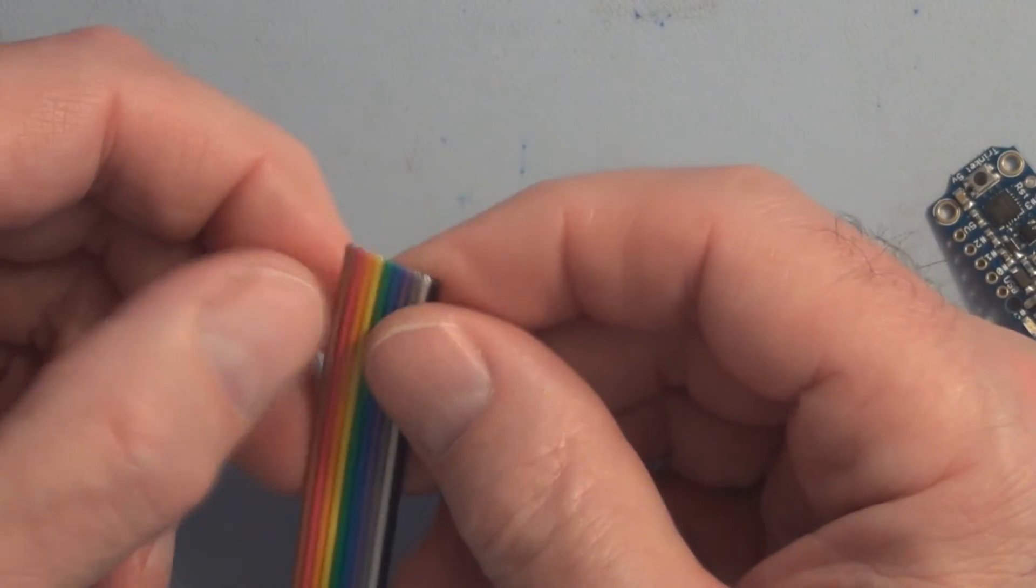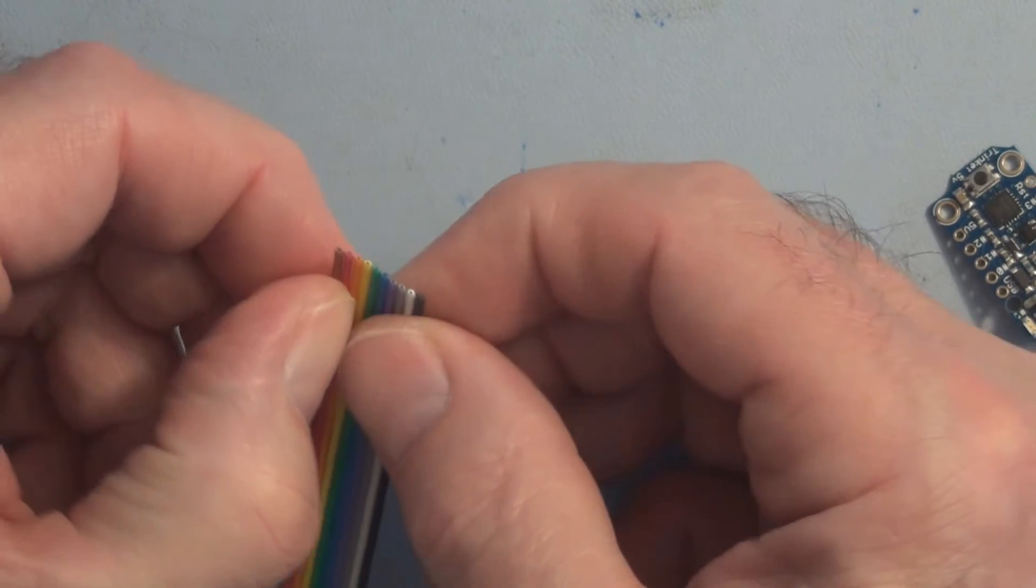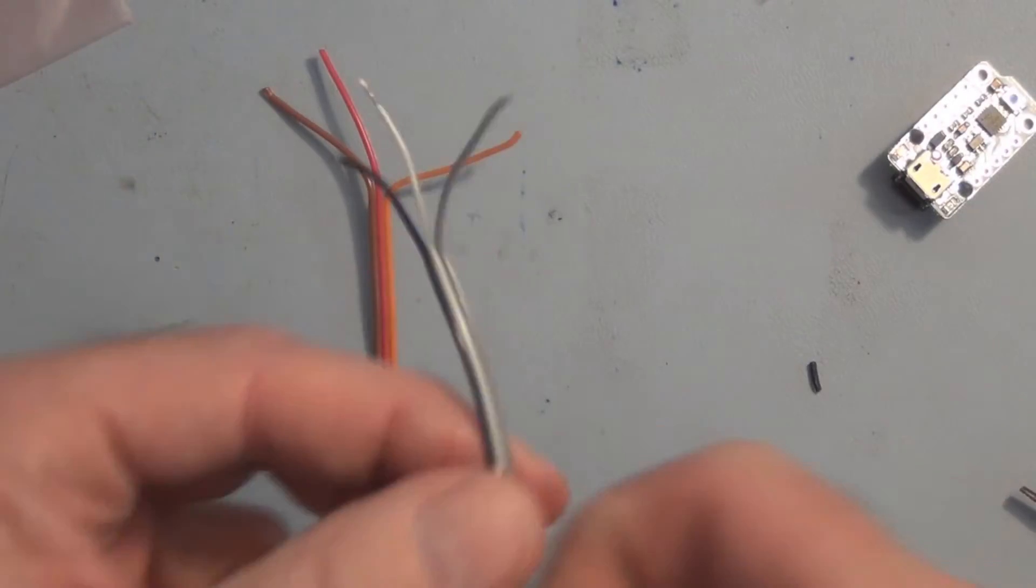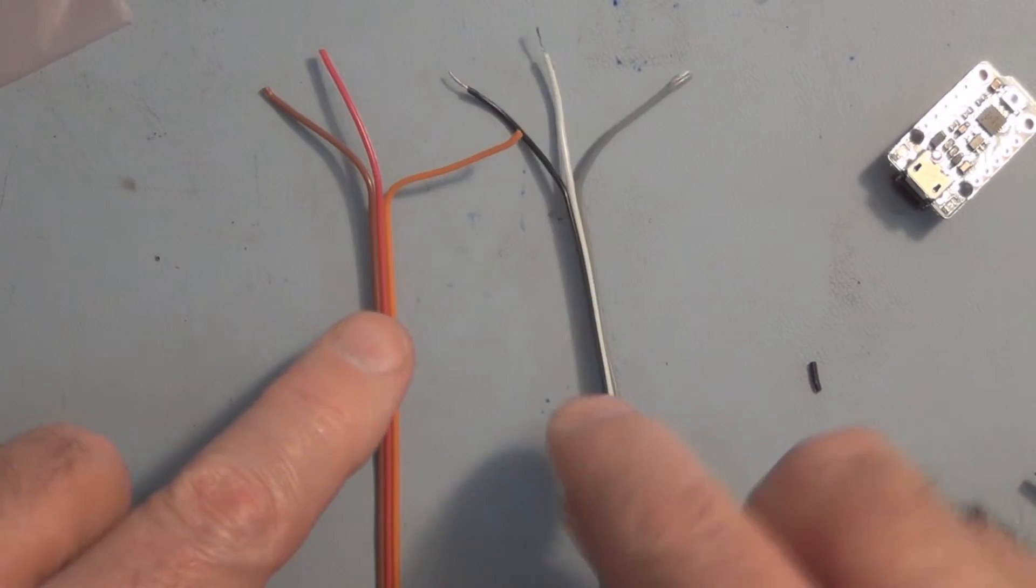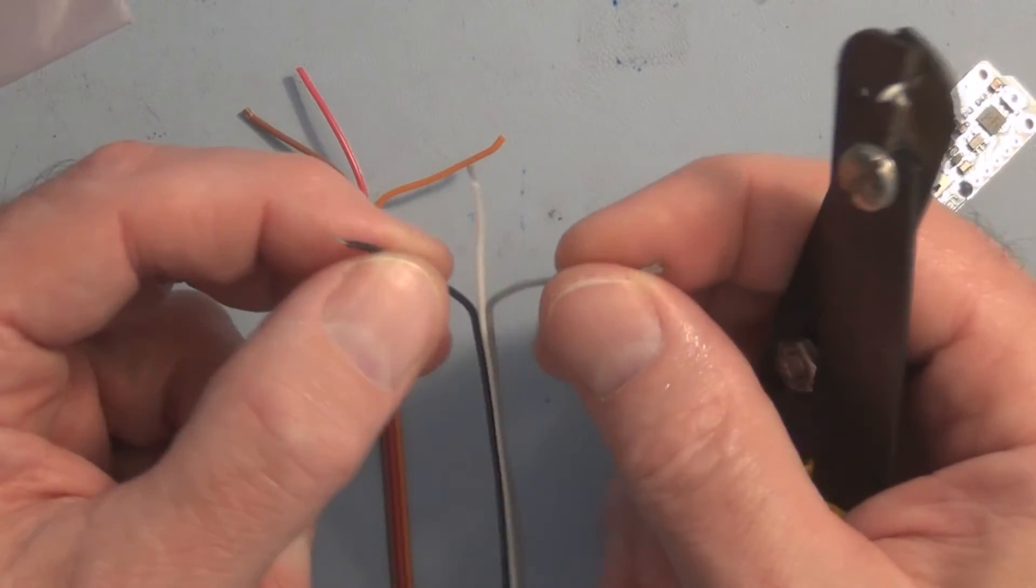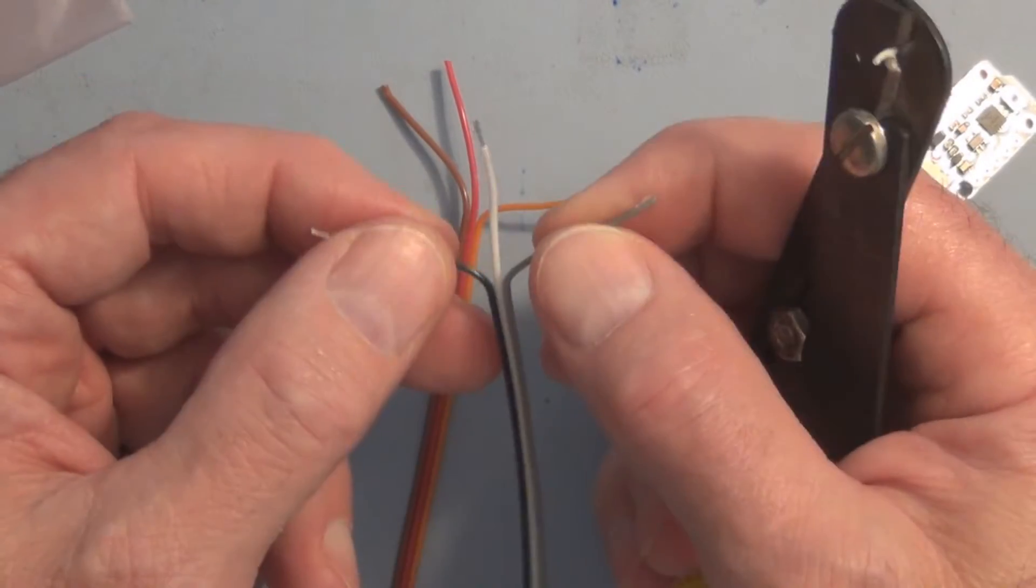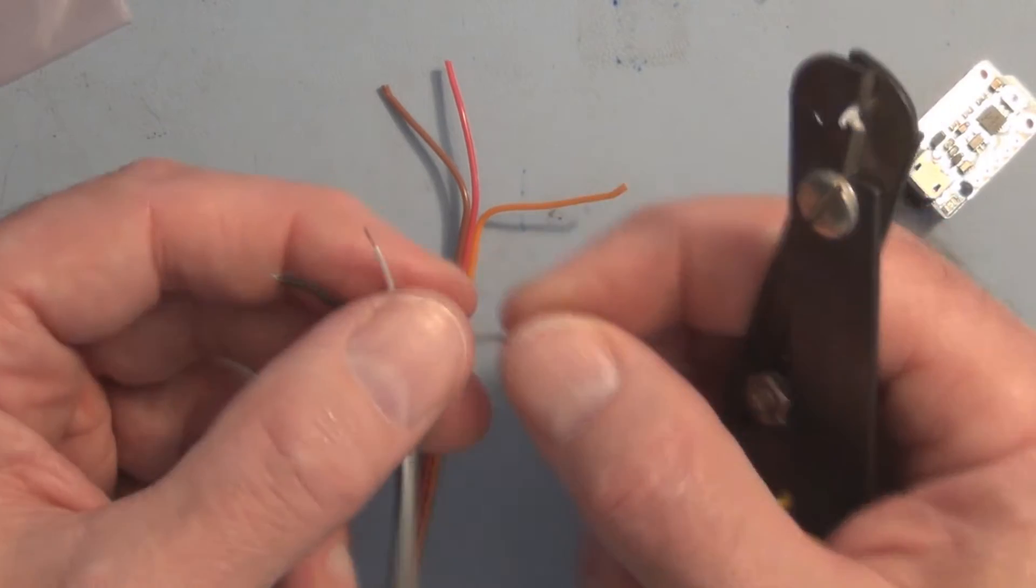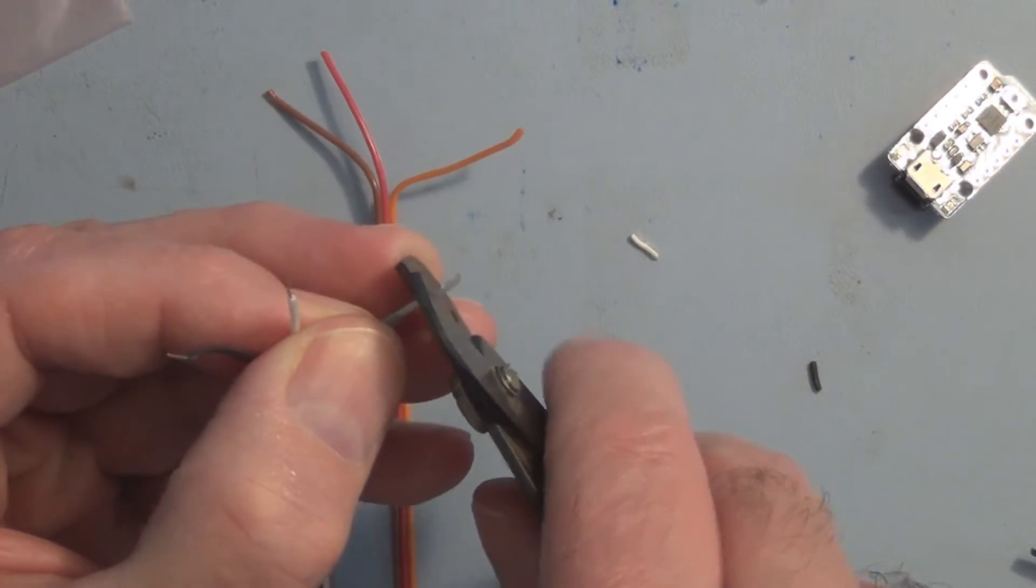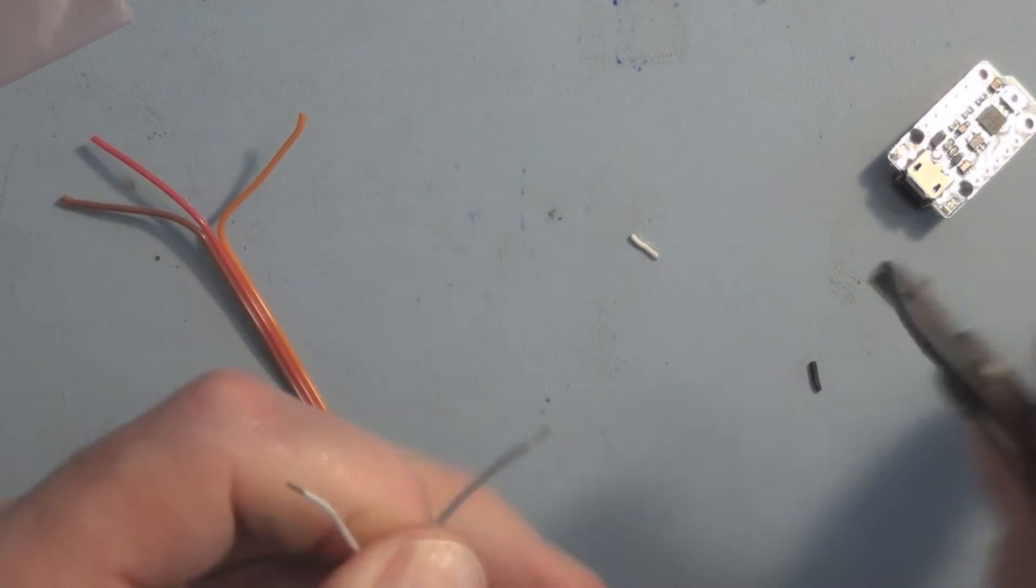Next I need to take this ribbon cable and separate it into groups of three wires. I've got two separate ribbon cables consisting of three wires each. I've pulled back about an inch on each end, separated the wires about an inch, and I'm just stripping the insulation off. I'm going to twist the wires so they don't fray and then tin them.